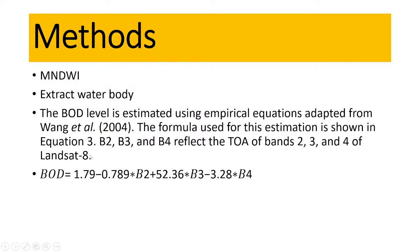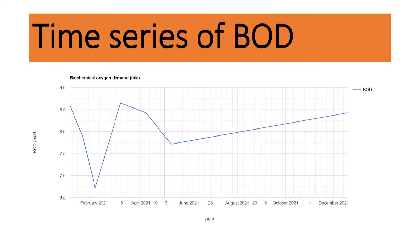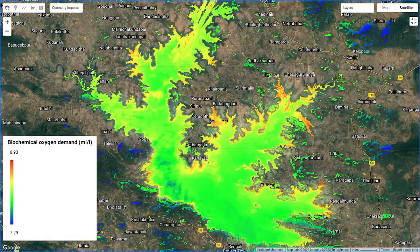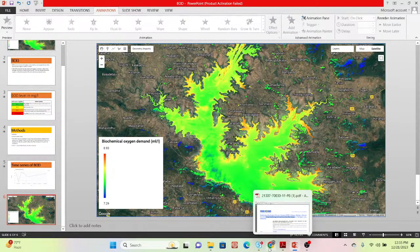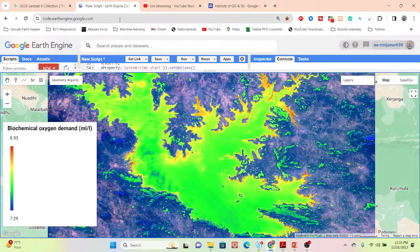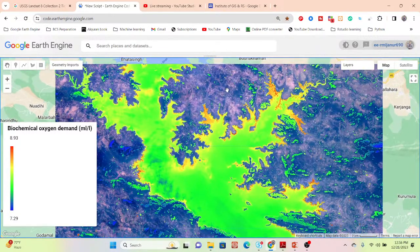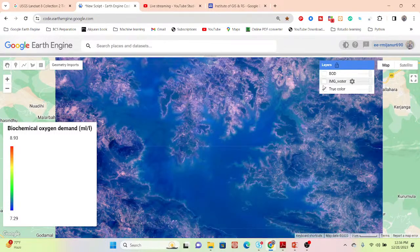I will use this equation to show how we can monitor Biological Oxygen Demand. We are also making a time series to identify temporal changes in BOD of the water body. Now let's go through the code step by step. Here you can see the code for BOD monitoring — I'll walk through it.